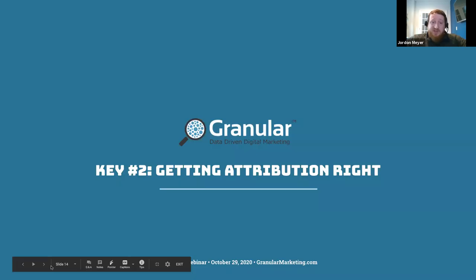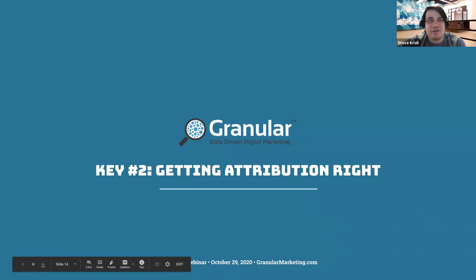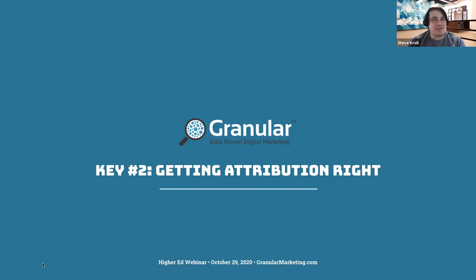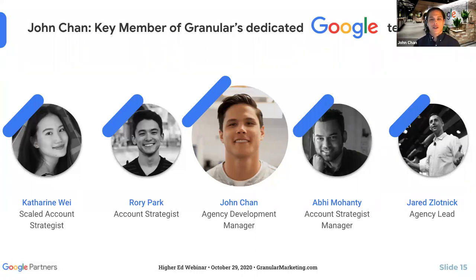John Chan, agency development manager for Google, is introduced for key number two on attribution. Google has millions of advertisers on their ad platforms — at last count four million external advertisers in 2015 — so Google can't have direct relationships with each. Agencies like Granular allow Google to scale support through their products. As premier partners, Granular keeps up certifications, performance, and best practices, and gets early access to betas and the latest products.